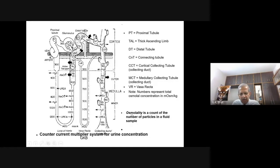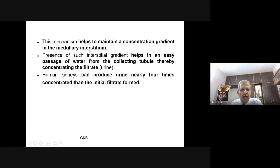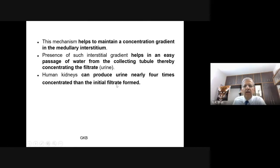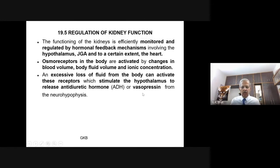Osmolarity is a count of the number of particles in a fluid sample. This mechanism helps to maintain a concentration gradient in the medullary interstitium — without which there cannot be any osmosis or diffusion. The presence of such an interstitial gradient helps in the easy passage of water from the collecting tubule, thereby concentrating the filtrate. Human kidneys can produce urine nearly four times more concentrated than the initial glomerular filtrate formed inside Bowman's capsule.